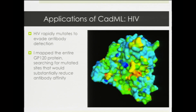I also looked at HIV. HIV is kind of the bane of antibodies' existence because it rapidly mutates to essentially avoid antibody detection — the antibodies cannot recognize it after it mutates so much. Instead of mapping an anti-HIV antibody, I mapped HIV itself — specifically a protein on the surface of HIV that antibodies bind to. I searched for sites that would reduce antibody affinity, because those sites are likely the ones that allow HIV to escape antibody detection. The sites shown in red and orange are ones my method predicted would allow HIV to escape by reducing how well antibodies can recognize it, which can help us understand HIV immune evasion and design targeted therapies.